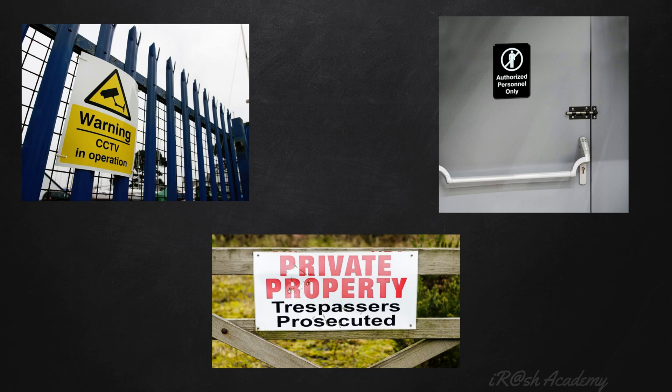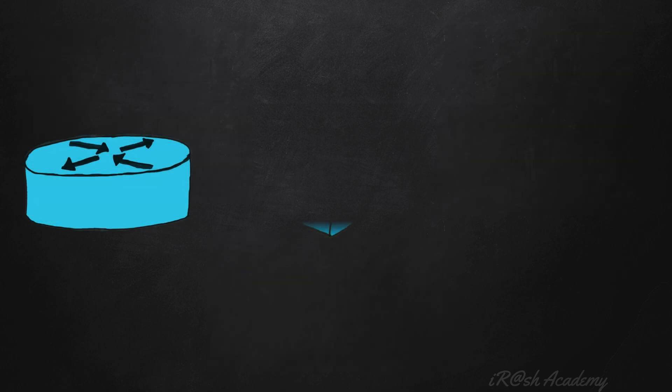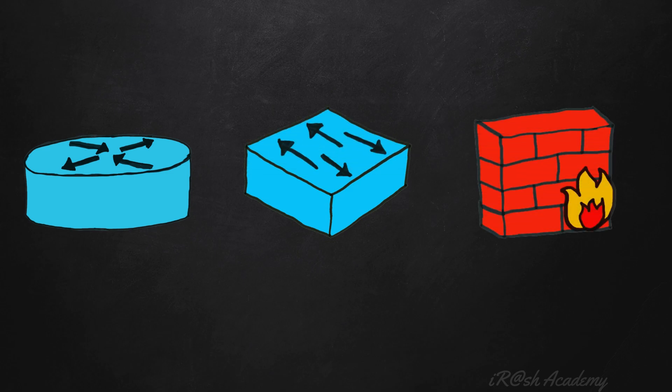Now we know how to protect our properties from unauthorized access or trespassing, but how are we going to protect our network devices from unauthorized access? Network devices are part of the network, so there is a possibility that other people can get access to them. Your network may contain routers, switches, firewalls, or any other networking devices, and people can access these devices internally or externally. This person may be an unauthorized person not permitted by your organization or by law.